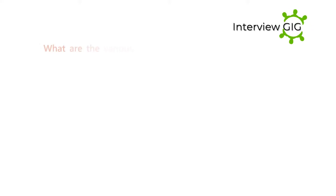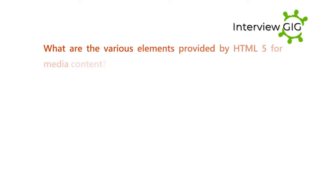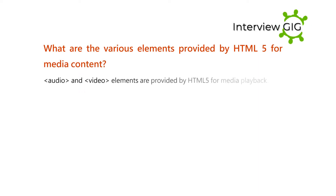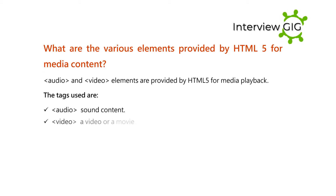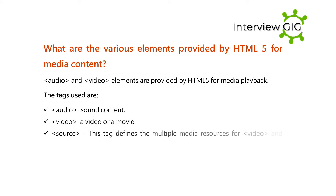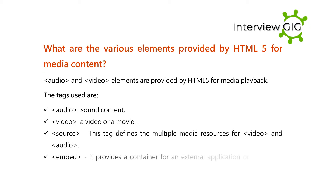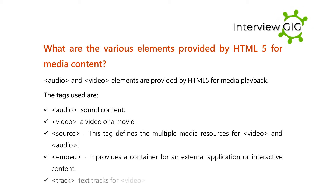What are the various elements provided by HTML5 for media content? Audio and video elements are provided by HTML5 for media playback. The tags used are: Audio, which defines sound content; Video, which defines a video or a movie; Source, which defines multiple media resources for video and audio; Embed, which provides a container for an external application or interactive content; and Track, which defines text tracks for video and audio.